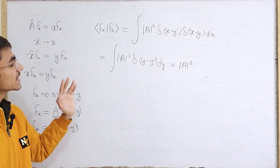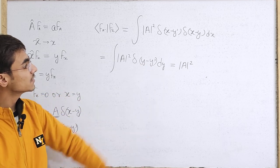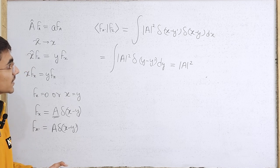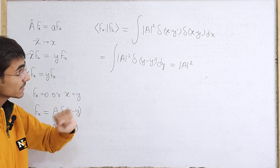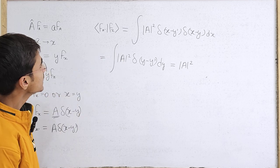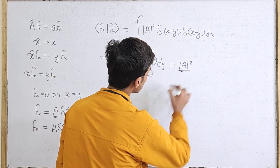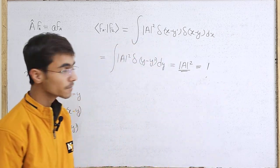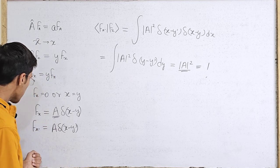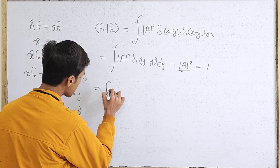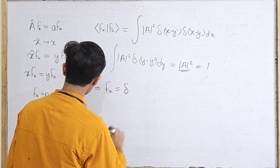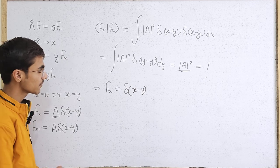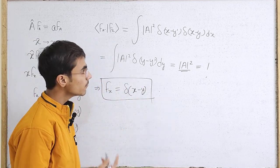If we define this inner product to be one, then |a|² is also one, so if we define a = 1, we find that the eigenfunction is simply f_x = delta(x minus y). For this particular eigenfunction, the Dirac delta of (x minus y) follows Dirac orthonormality, and this is how we have imposed orthonormality on this — by selecting one particular normalization constant.